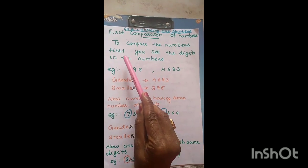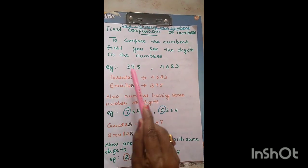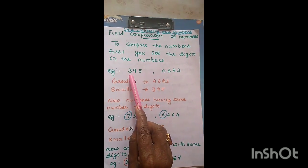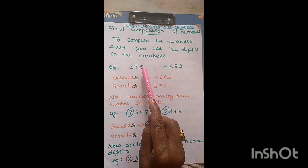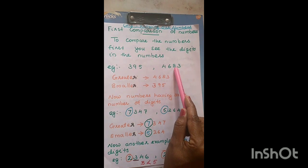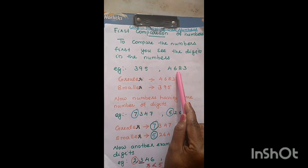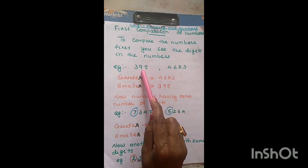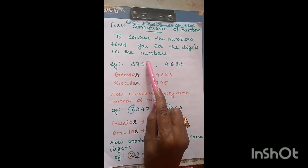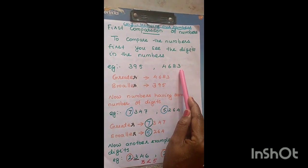To compare the numbers, first you have to see how many digits are there in the numbers. For example, 395 and 4683. In 395, there are 3 digits. In 4683, there are 4 digits. So more digits are in 4683, making it the greater number and 395 the smaller number.